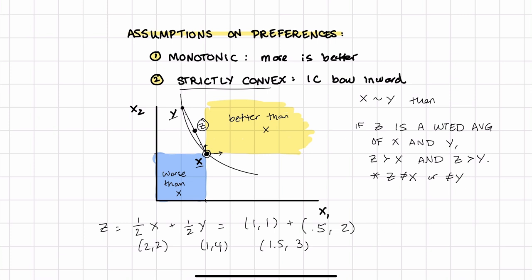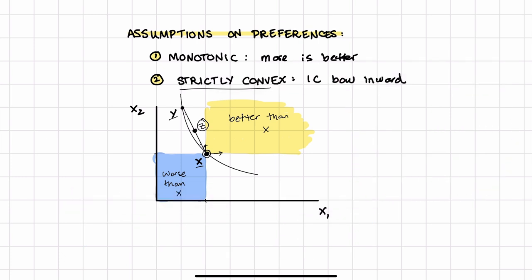And if our preferences are strictly convex, then there are two important consequences. Let me clean this up. Important consequences of strict convexity. One, there's no flat spots in our indifference curves. No flat spots. And so, for any set of prices, P1, P2, there will be a unique optimal bundle.